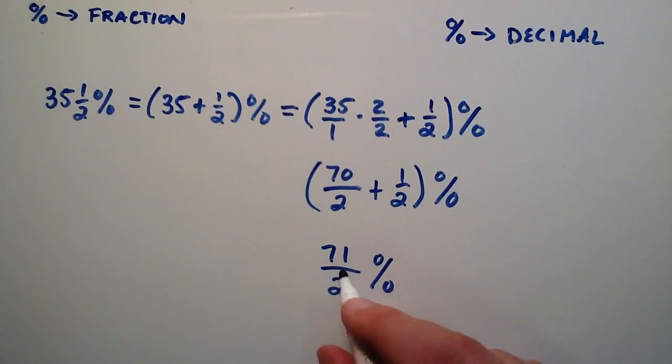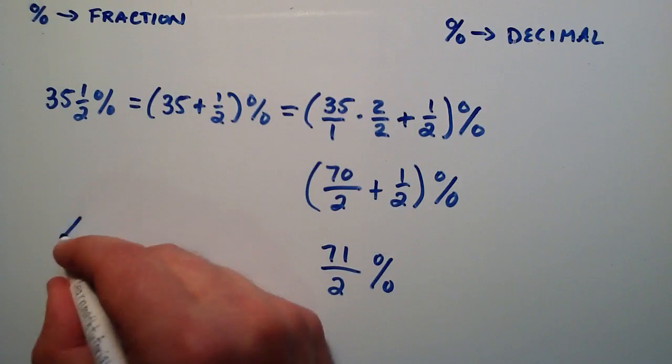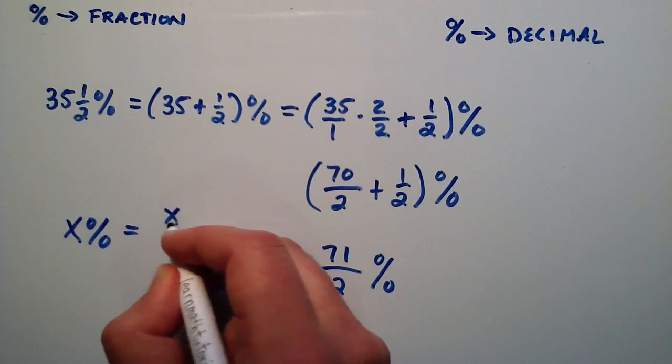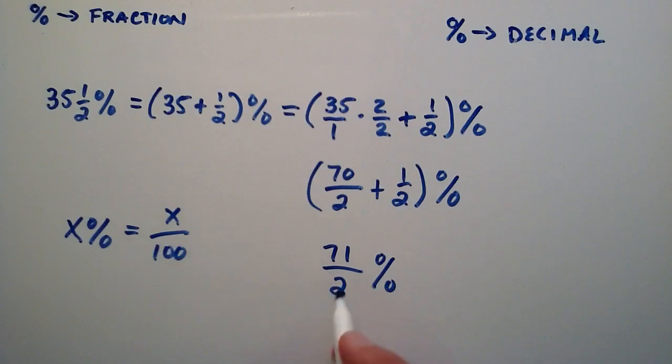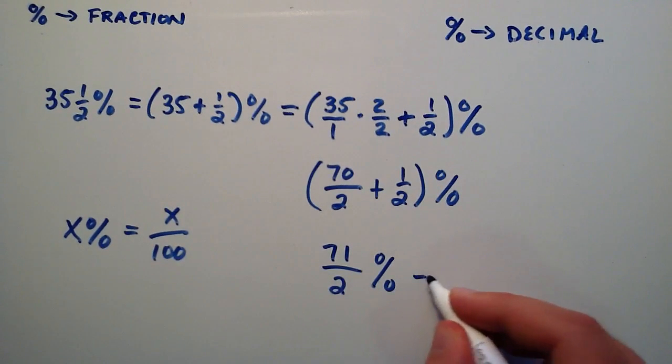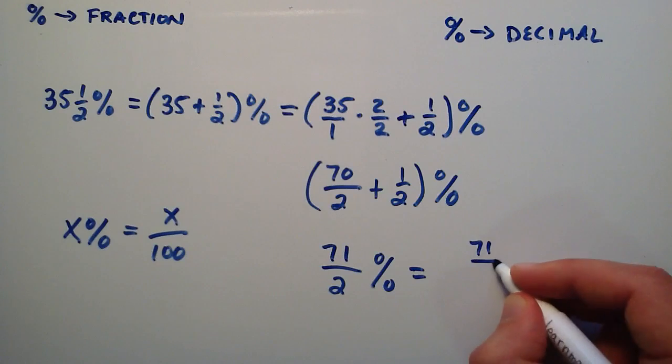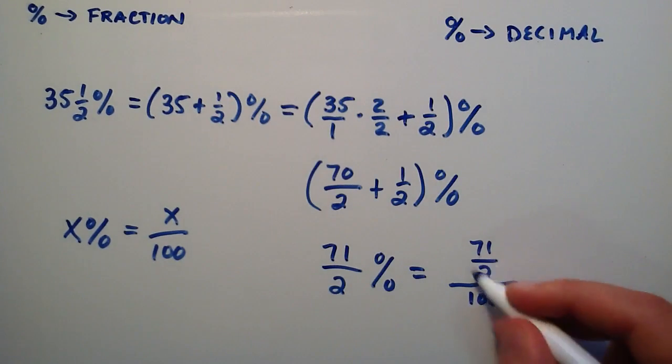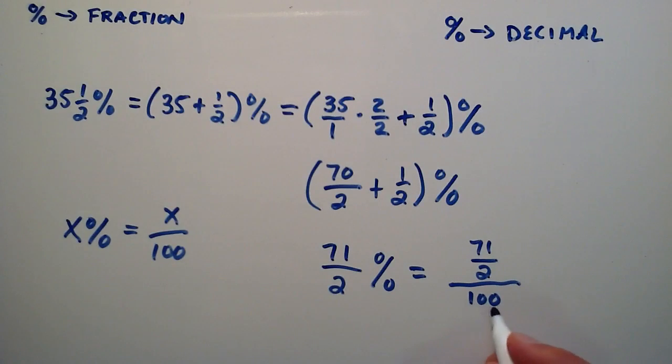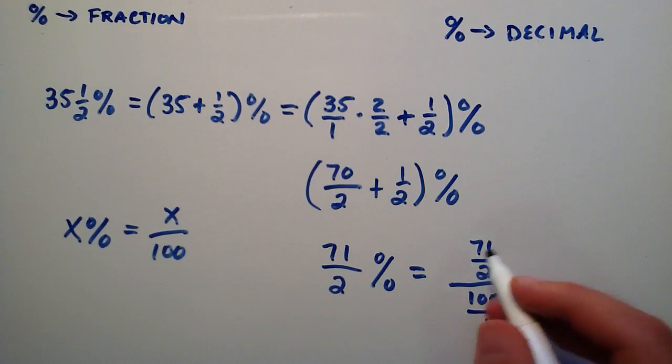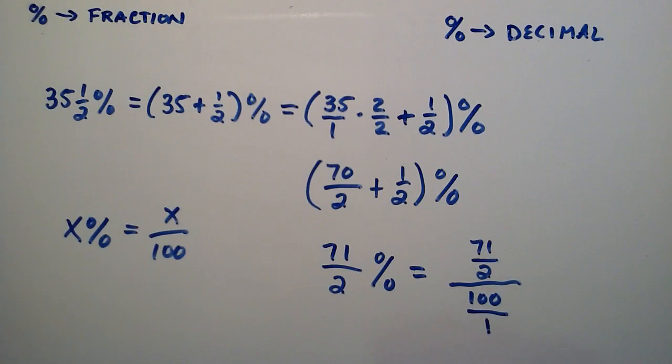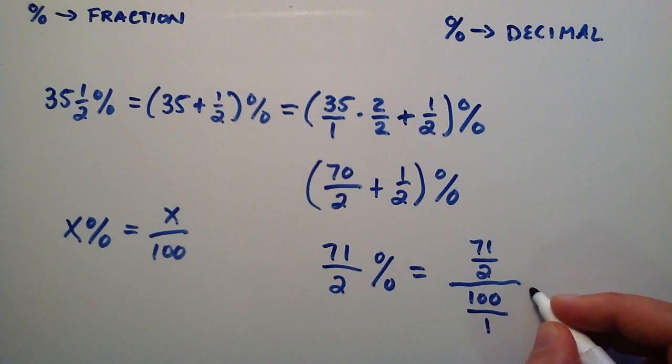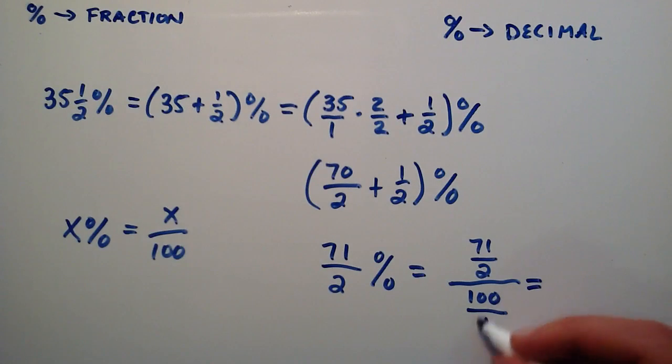So now this is our x in that form that I had up here. I erased it, but it looked like this: X percent equals x over 100. So 71 over 2 is our x. So this can be rewritten as 71 divided by 2 divided by 100. So a fraction divided by 100. And we can actually make the denominator into a fraction here by dividing it by 1. So now we simply have a fraction of fractions. And we can solve this problem by rewriting it as a multiplication problem by inverting this denominator here. We flip the denominator.